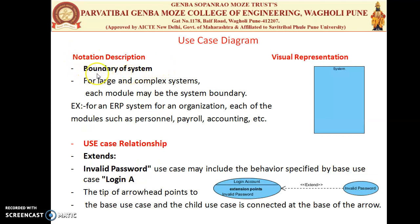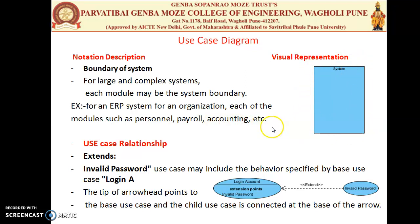Next is the System Boundary, which is a rectangular portion showing the limitation of that particular functionality. For example, in an ERP System, the organization has different departments or modules such as Personnel, Payroll, and Accounting. Each module — Accounting, Payroll, and Personnel — will have its own System Boundary, representing the limitation for that particular function or use cases.